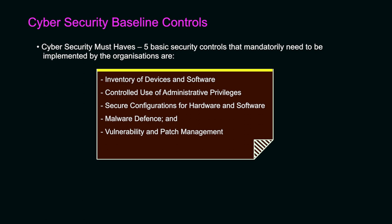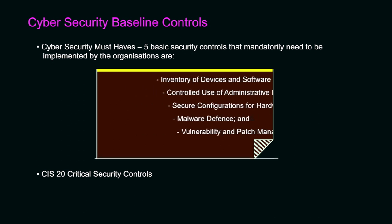The five basic security controls recommended as a starting point include: maintaining an inventory of devices and software, controlling administrative privileges so they are not distributed to all users, using secure configuration templates for hardware and software, implementing malware defense and anti-malware solutions, and performing vulnerability and patch management. Organizations can then progress to the CIS 20 Critical Security Controls as a further recommended practice to improve cyber security.